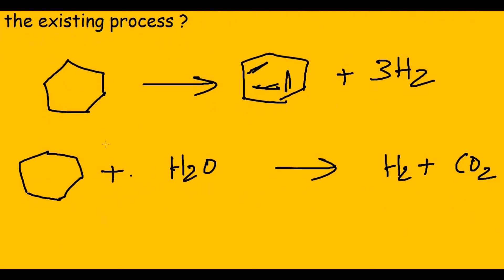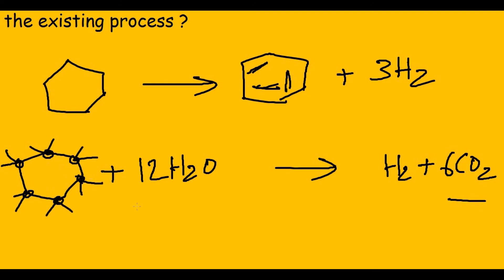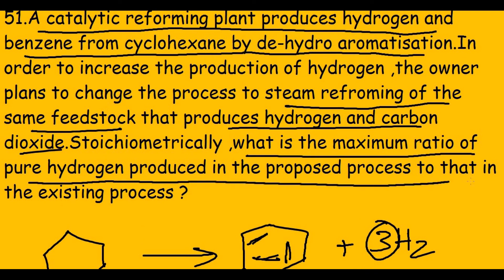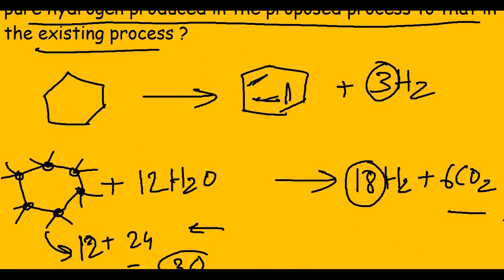Balancing the steam reforming reaction: first balance carbon — cyclohexane has 6 carbons, so place 6 in front of CO2. That gives 12 oxygen atoms on the right, so multiply steam (H2O) by 12. For hydrogen: cyclohexane contributes 12 H atoms and 12 H2O contributes 24 H atoms, giving 36 total on the left side. So we need 18 H2 on the right. The balanced reaction is: C6H12 + 12H2O → 6CO2 + 18H2.